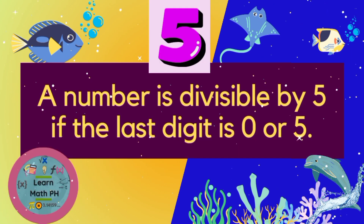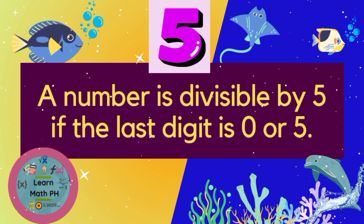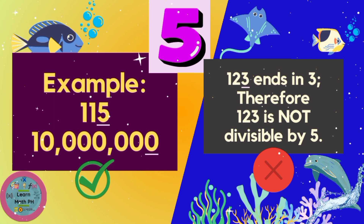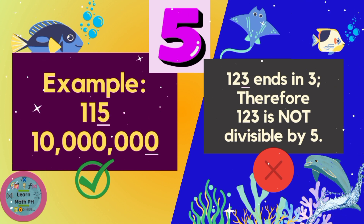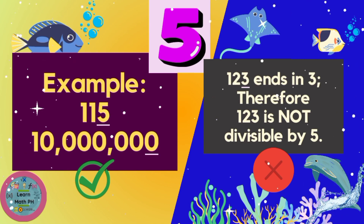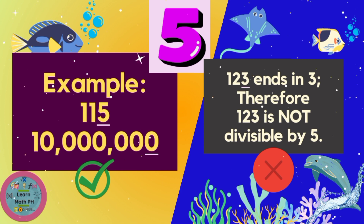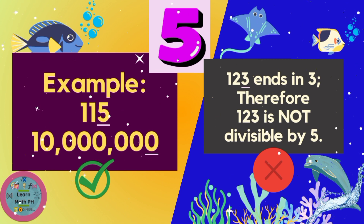A number is divisible by 5 if the last digit ends in 0 or 5. Madali lang ito — kapag nag-end sa 0 or 5, divisible by 5 siya. Halimbawa, 115 ends in 5, so it is divisible by 5. 10 million ends in 0, so it is divisible by 5. Pero kapag tulad ng 123, it is not divisible by 5. Basta ends in 0 and 5, divisible siya by 5.